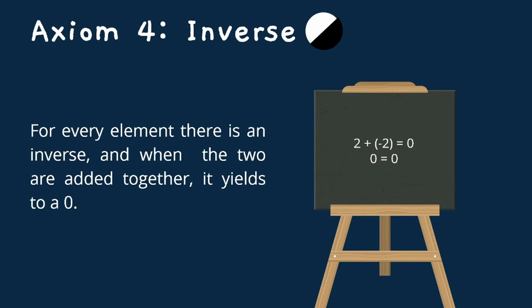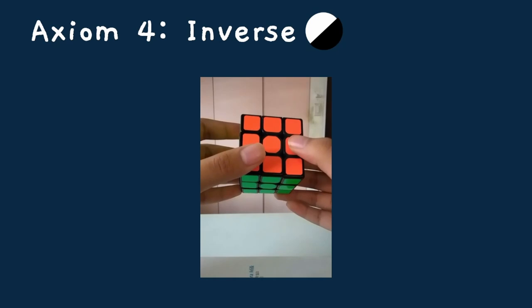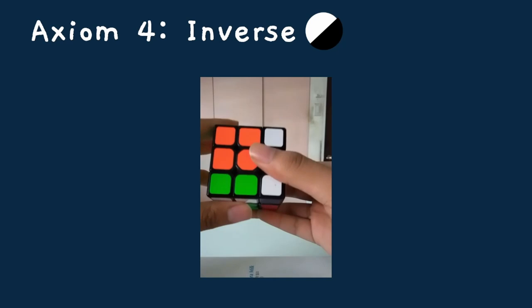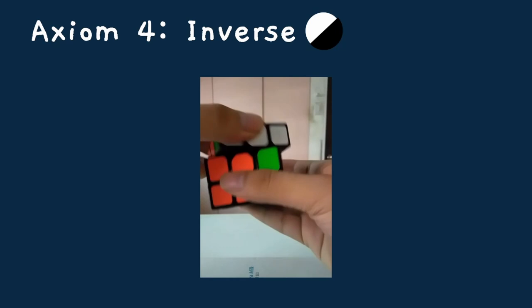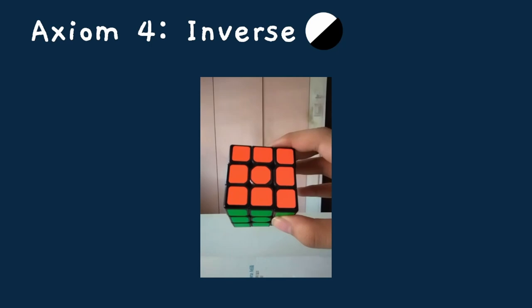Axiom 4, inverse, states that for every element, there is an inverse, and when the two are added together, it yields to a 0. For example, we have the number 2. The number 2 is a positive integer, so the inverse of positive 2 is negative 2, and when we add positive 2 to negative 2, it will equate to 0. With the use of a Rubik's cube, we are going to inverse the moves. Let's say we use the algorithm R, U, F. The inverse counterpart of this algorithm is F prime, U prime, R prime. That is the inverse axiom.